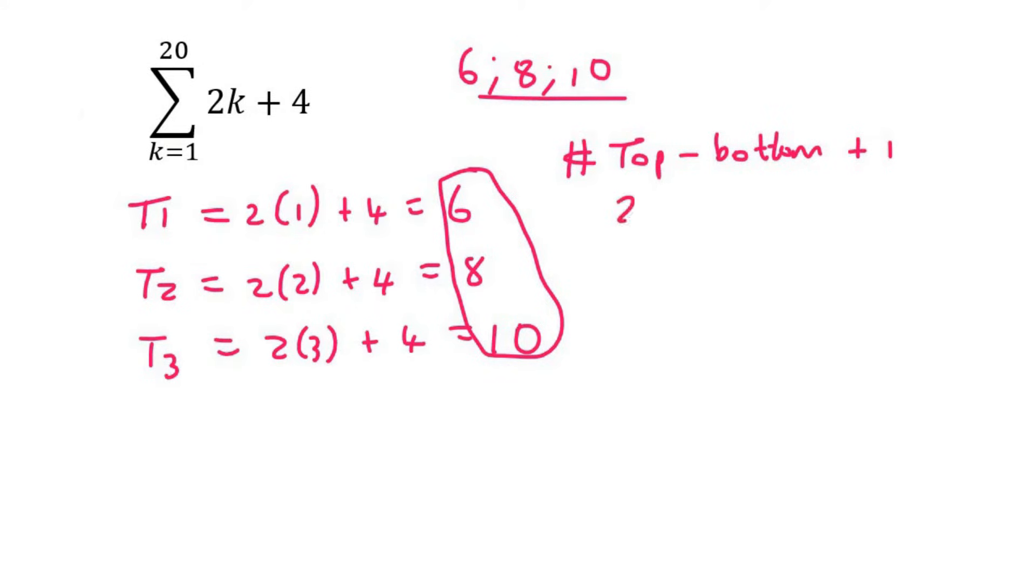So the top number is 20. The bottom number is 1, and then you plus 1, and that gives you 20. So yes, it is 20 now, but that's just because the number at the bottom is a 1. So just look out for that.